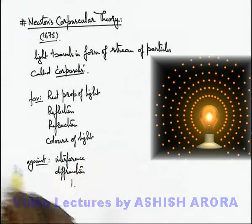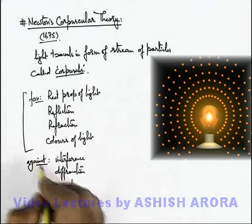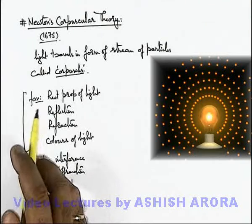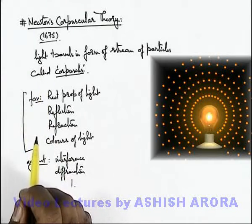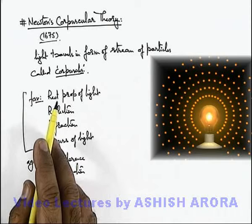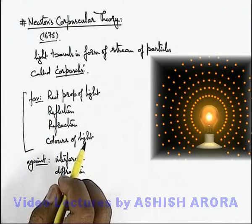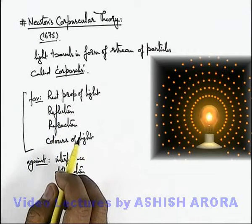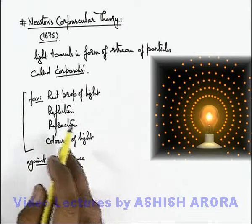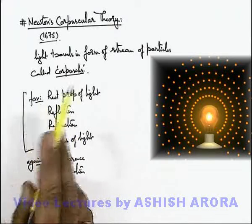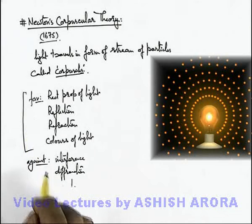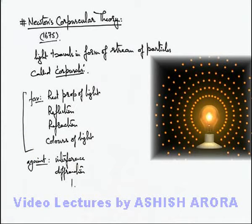Although the theory was quite popular at the time it came up because it could explain some fundamental phenomena, it later failed after Foucault's observation that the speed of light in a denser medium must be less — which could not be explained by Newton's corpuscular theory. The theory was thus abandoned, and later other theories came up, which we'll take up in the coming sections.